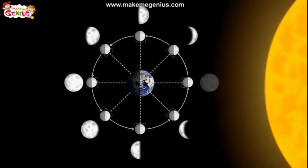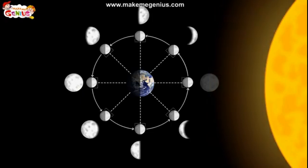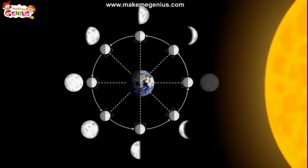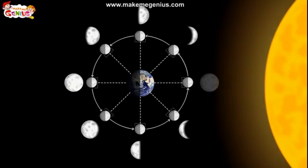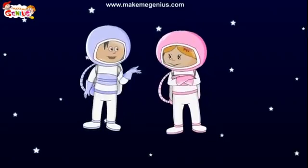We can say that the lunar phase is the amount of moon we can see from the earth depending upon how much it is lit up by the sun. And this amount changes every day! The phases of the moon depend on the moon's position in relation to the earth and the sun. As the moon makes its way around the earth, we see the bright parts of the moon's surface at different angles. These are called phases of the moon.